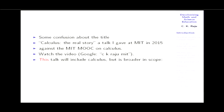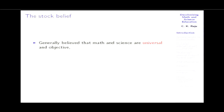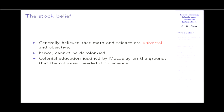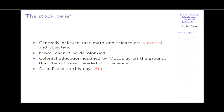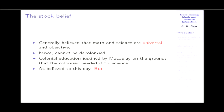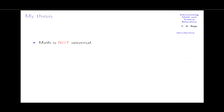The stock belief is that decolonizing math and science cannot be done — that math and science are objective and universal. This is not true. Colonial education was justified by Macaulay on the grounds that the colonized needed it for science, and therefore we have to address it if we want to decolonize. Otherwise, any other kind of decolonization will be superficial. To this day, people believe you need Western education for the sake of science and technology. But the thesis is that math is not universal.